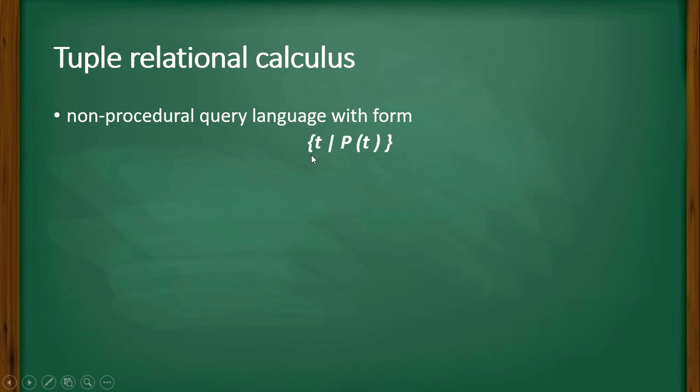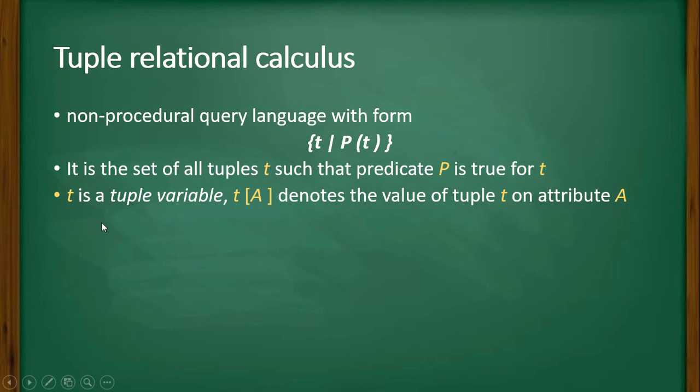tuple set, we write like this: it is the set of all tuples t such that the predicate P is true for t. t is a tuple variable. t.a denotes the value of tuple t on attribute a.